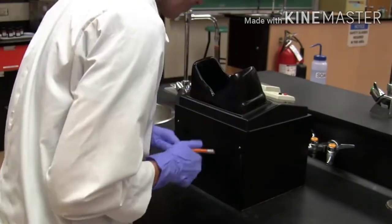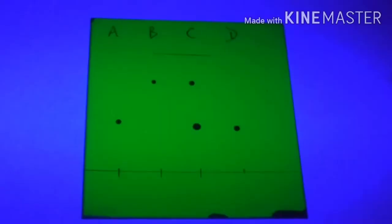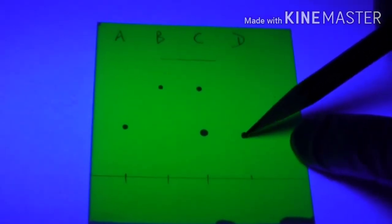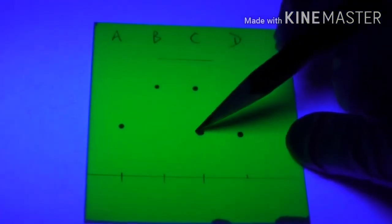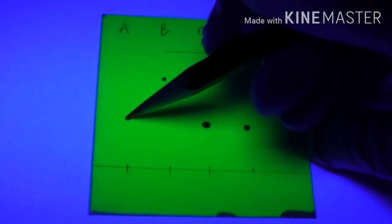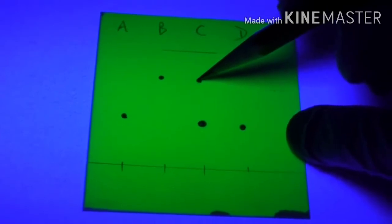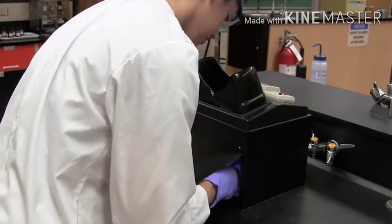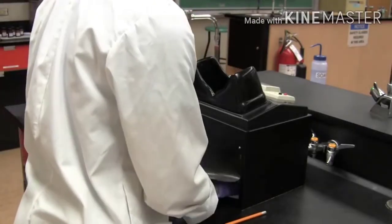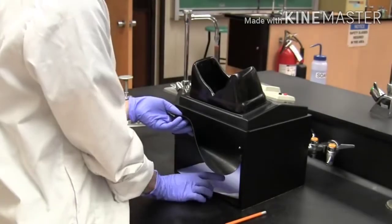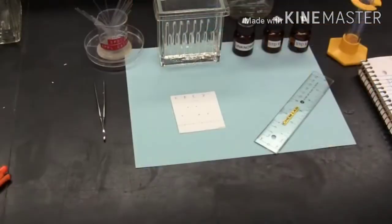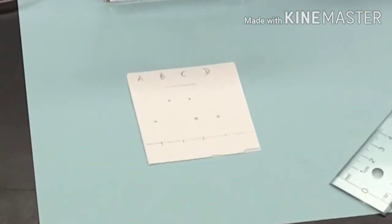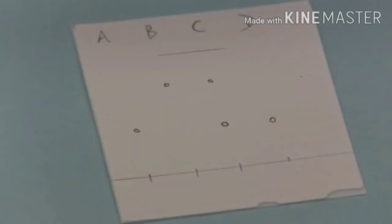So while visualising the plate under UV, we are now able to outline all the spots with a pencil, so that we can locate the spots under visible light. And once all the spots are outlined, we can remove the plate from the UV light box. And now that the plate is no longer under UV light, we can see all the spots together with the solvent front. Let's take a closer look at the results.